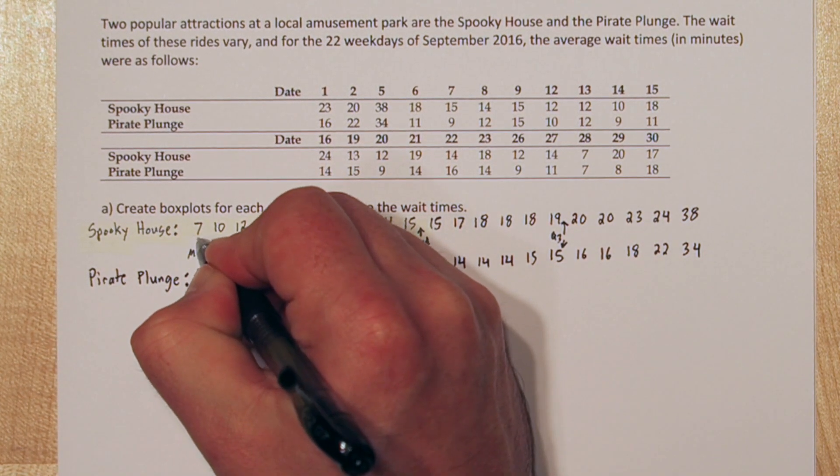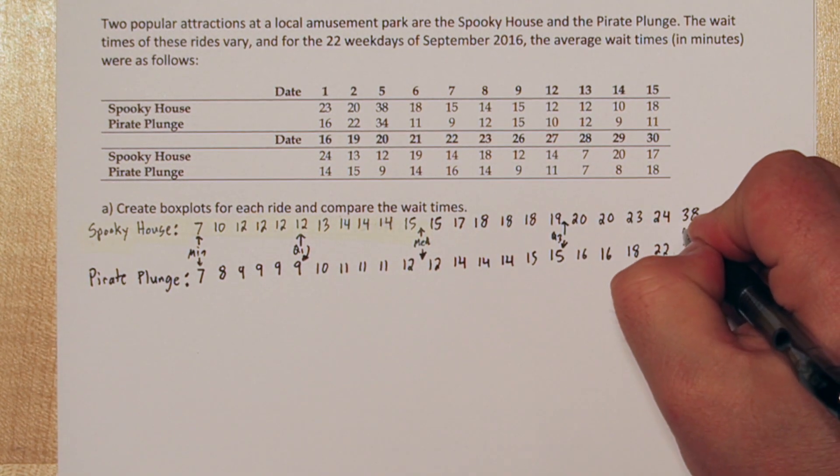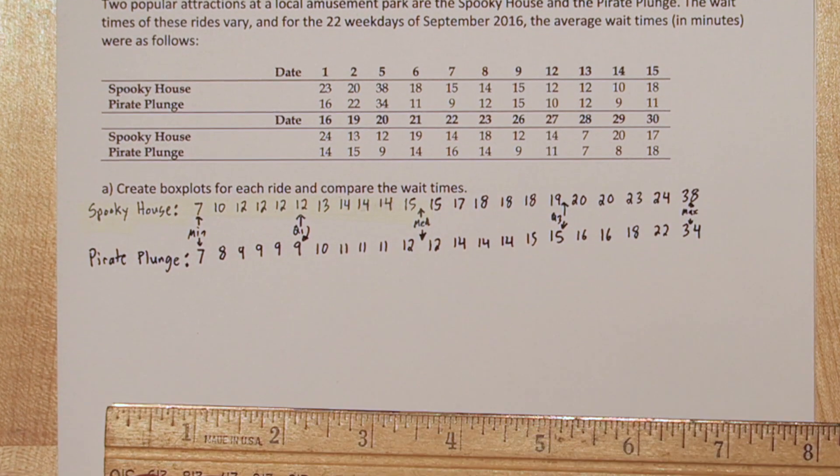The minimum waiting time for both rides is 7 minutes. And the maximum waiting time for spooky house is 38 minutes and 34 minutes for Pirate Plunge. Now let's make our box plot.